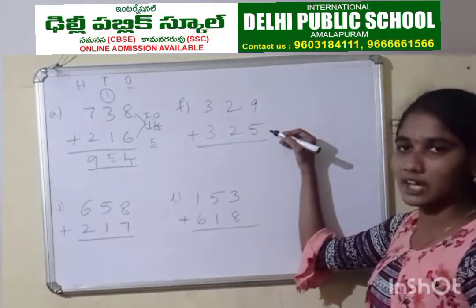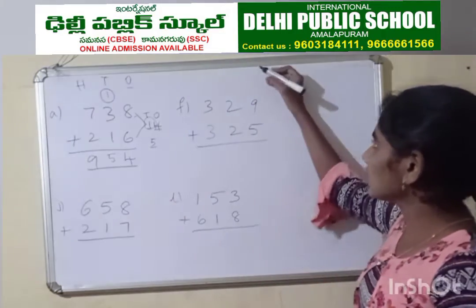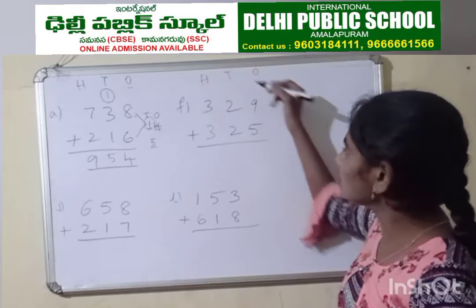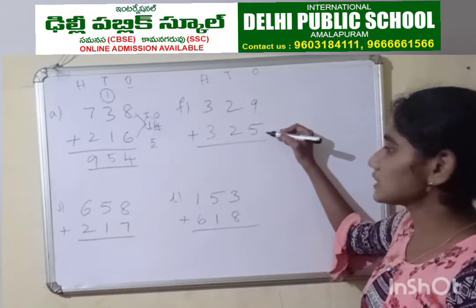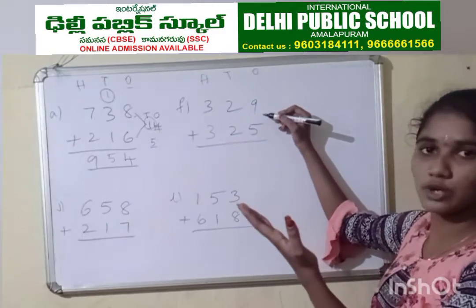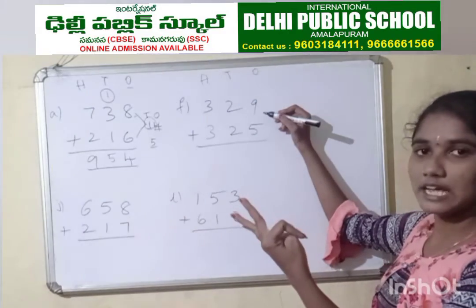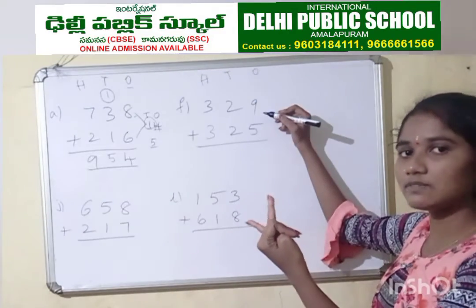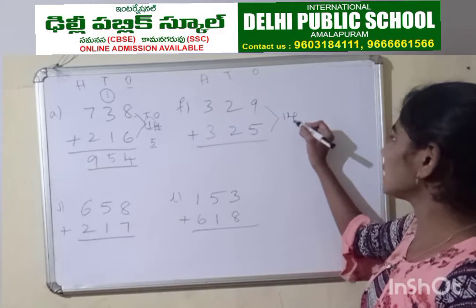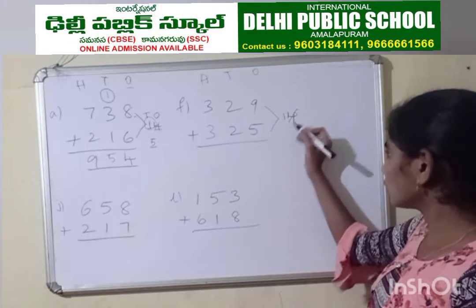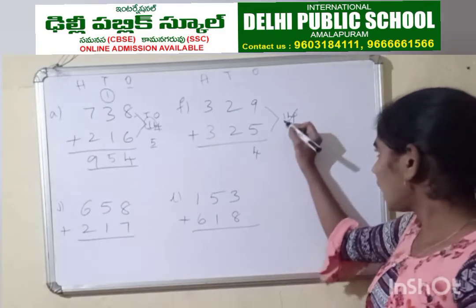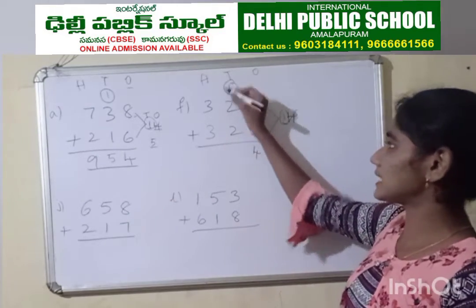329 plus 325. We are going to start from the 1's place as usual. 9 plus 5: keep 9 in mind, take 5 fingers. Count 9 after: 10, 11, 12, 13, 14. So again you got a 2-digit number. Take the 1's place digit 4 down, and write 1 as a carry forward in the 10's place.